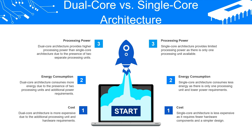Now let's differentiate dual core architecture and single core architecture using basic parameters. On the basis of cost, dual core architecture is more expensive due to the additional processing unit and hardware requirements, while single core architecture is less expensive as it requires fewer hardware components and a simpler design. For energy consumption, dual core architecture consumes more energy due to the presence of two processing units, whereas single core architecture consumes less energy with only one processing unit and lower power requirements.